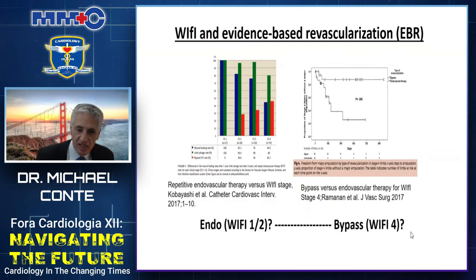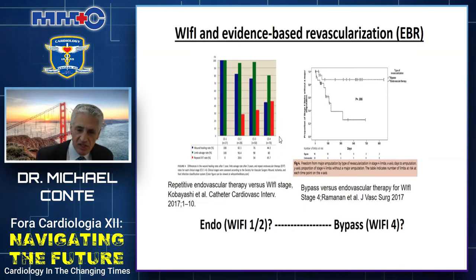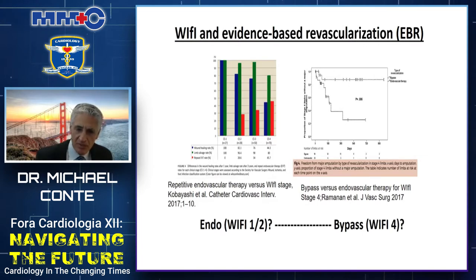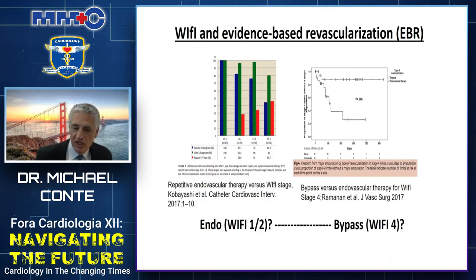Data from a Japanese endovascular-exclusive enterprise shows that clinical success degrades significantly in WIfI 4 patients treated with endovascular intervention, with a higher rate of major amputation and lower rate of wound healing. Conversely, data from our center demonstrates that patients with WIfI stage four had much improved freedom from major amputation when treated with open bypass. While this is not randomized data, it is suggestive that one should target the type of revascularization based on the severity of limb threat.